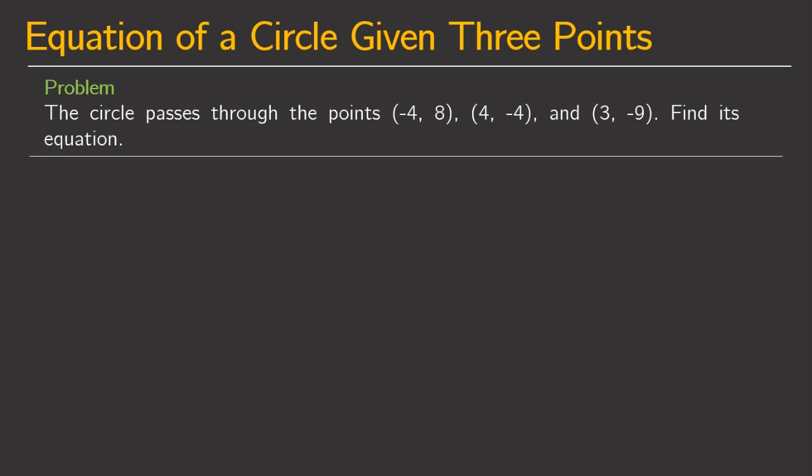Hey guys, so in this video we are going to solve a problem in analytic geometry, particularly the equation of a circle given 3 points. The problem is: the circle passes through the points negative 4, 8; then 4, negative 4; and 3, negative 9. Find its equation.